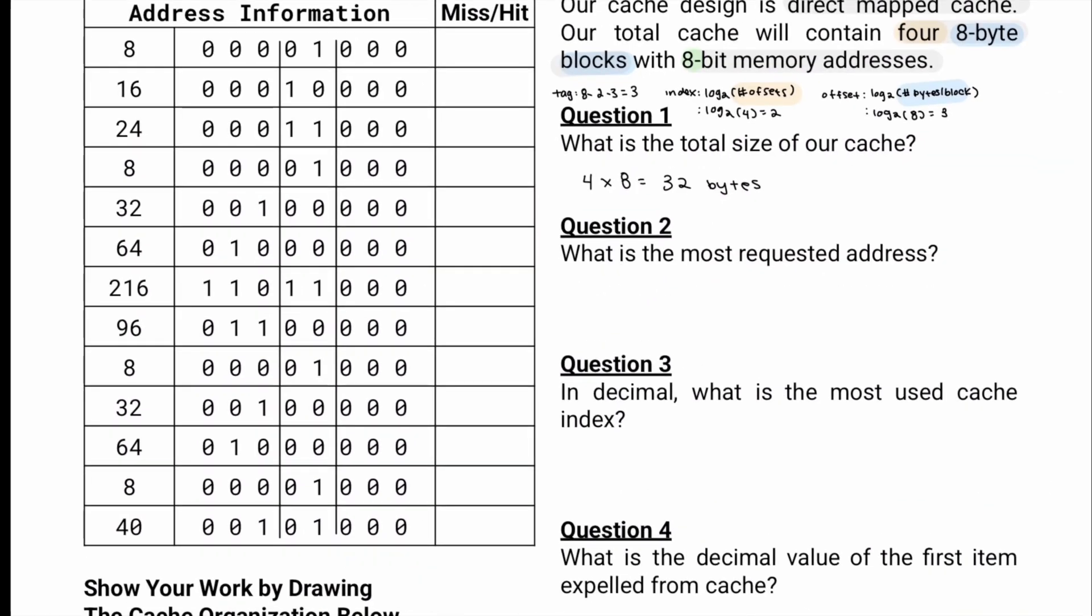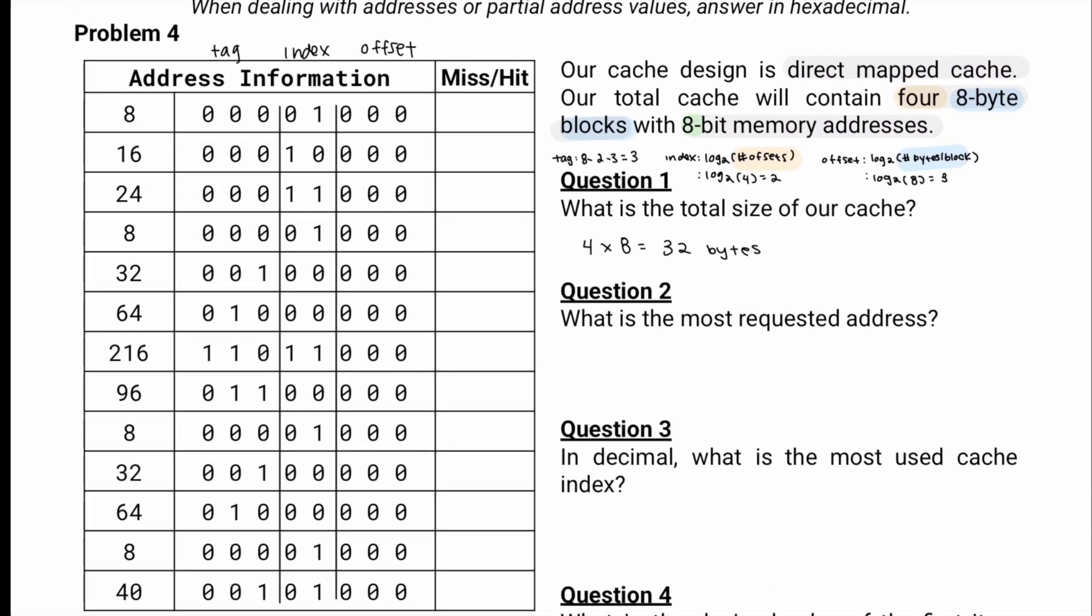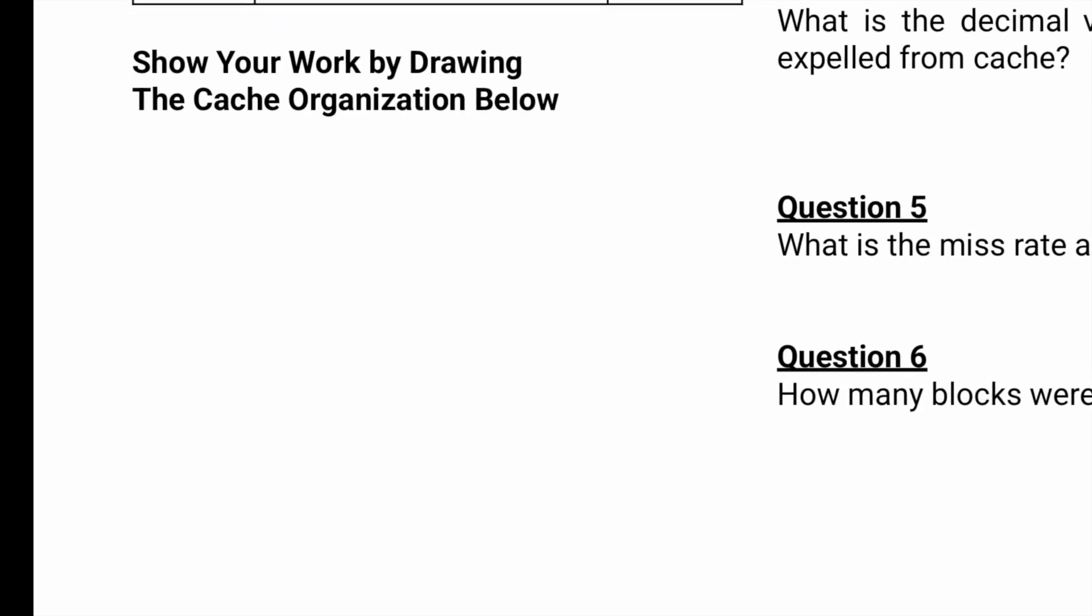We have four different combinations for the index. We have 01, 10, 11, and 00. So when we draw our cache, we have our index. Indices are 00, 01, 10, and 11, and our tag.